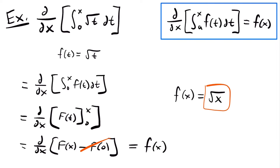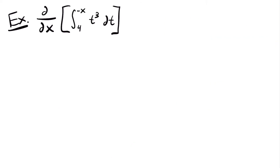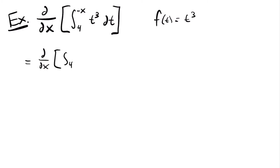Let's look at another example of using the second part of the fundamental theorem of calculus. For our next example, we have the derivative with respect to x of the integral from 4 to negative x of t cubed dt. Just like before, let's start by setting our integrand — the function t cubed — equal to f of t. So f of t is equal to t cubed. Rewriting our problem: the derivative of the integral from 4 to negative x of f of t dt.